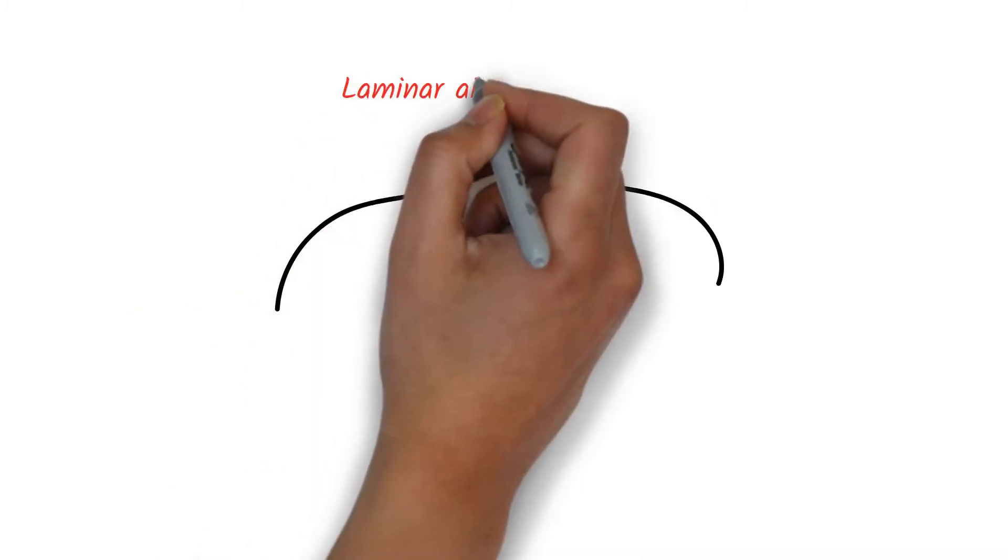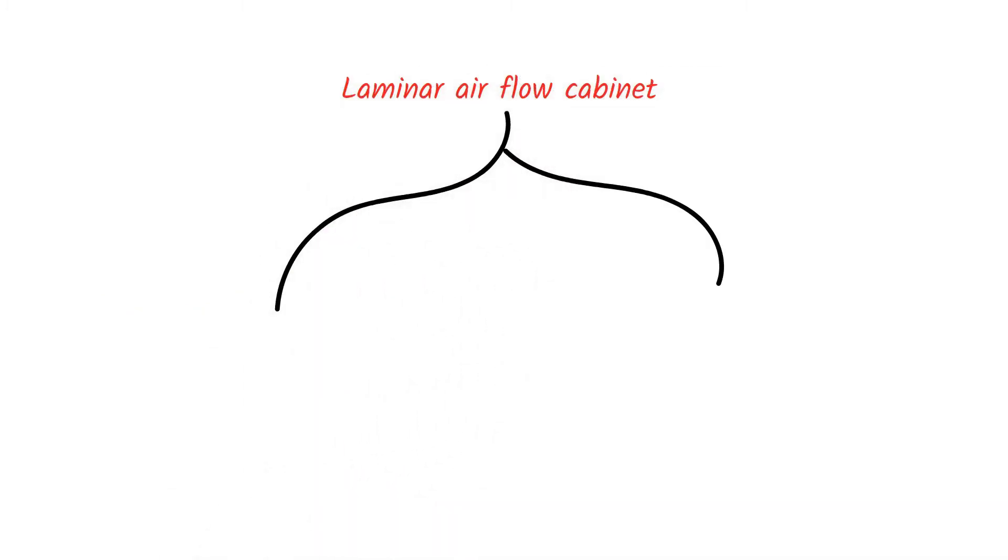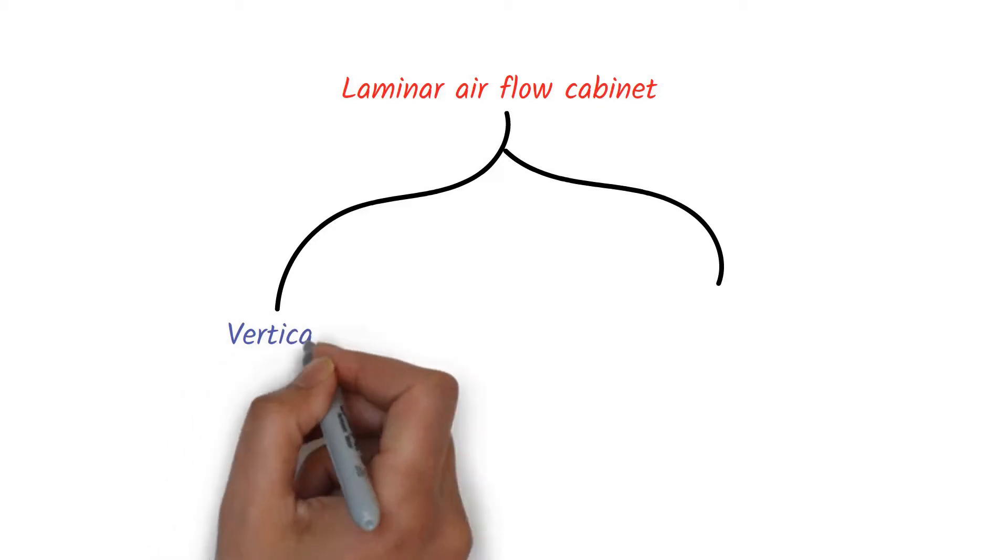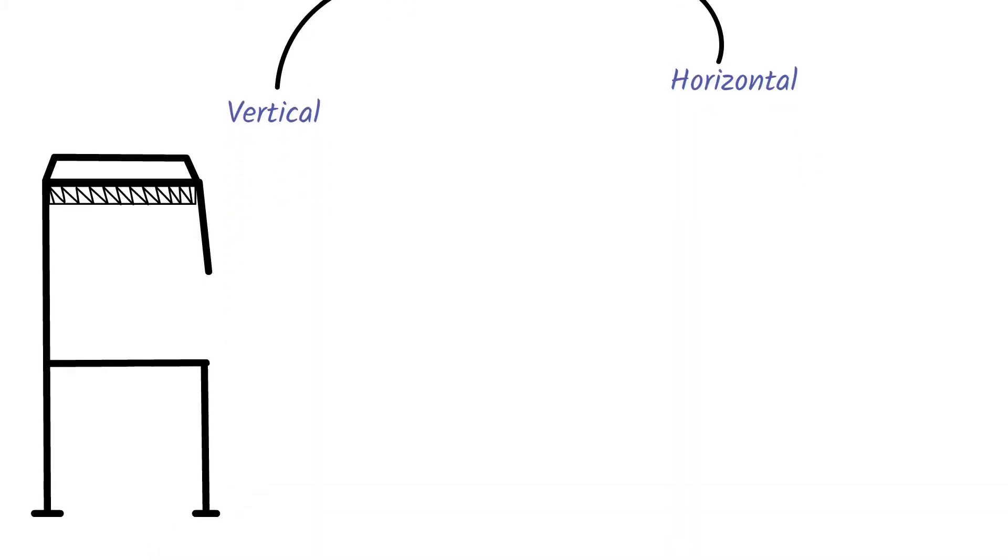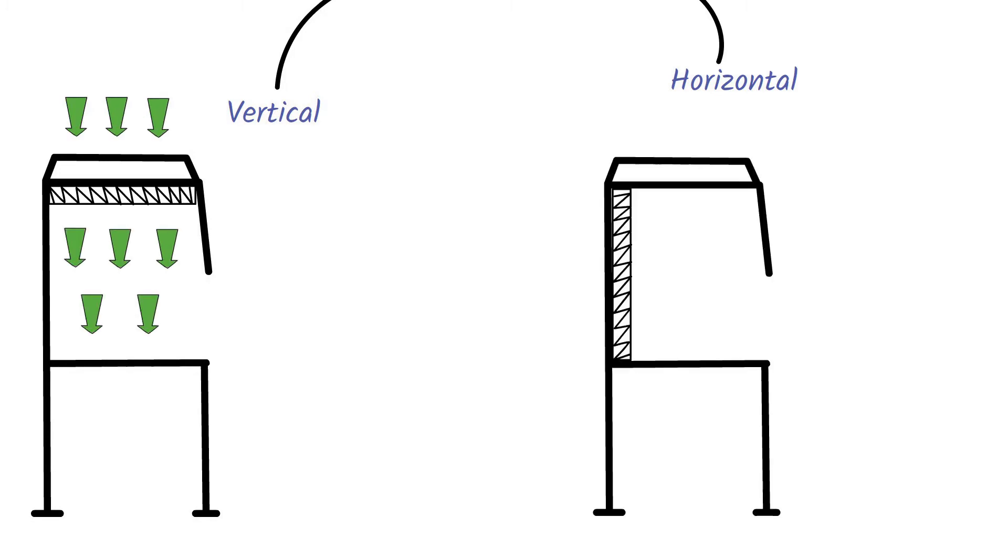There are two types of laminar airflow cabinets based on the direction of the airflow: vertical and horizontal laminar airflow cabinets. In the vertical laminar airflow, air moves from the top of the cabinet towards the workbench. Similarly, in the horizontal laminar airflow, the air flows from behind towards the operator.